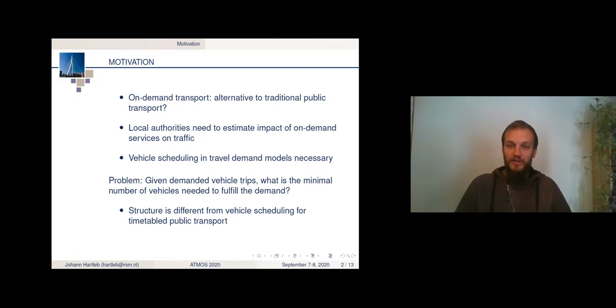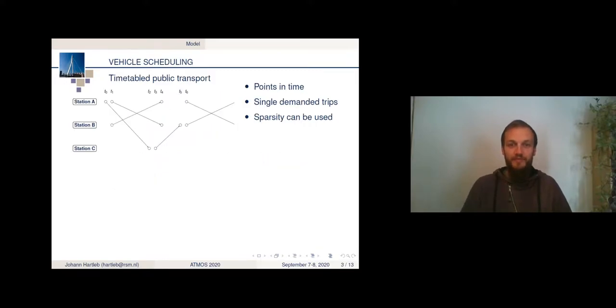But the structure is nevertheless different from traditional vehicle scheduling for timetabled public transport. Let's have a look at this. For timetabled public transport, we usually consider, in this case, the vertical stations. And we have discrete stations in the city where the public transport vehicles operate and arrive and depart. And they do so at dedicated points in time. So we have single demanded trips, and this is usually used in solution approaches.